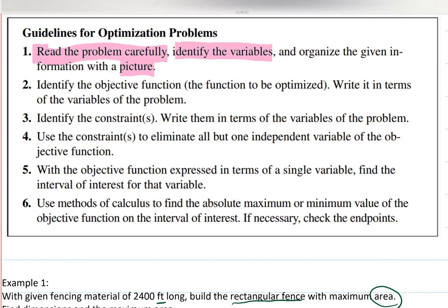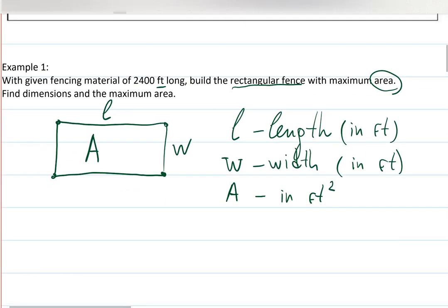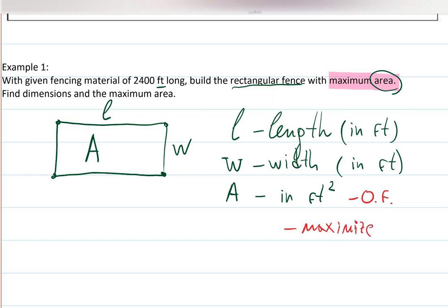Now identify the objective function — that's the function we want to optimize. It says 'find the maximum area,' so area is my objective function, and we want to maximize it. This problem is pretty realistic: imagine I went to a store during a discount and bought 2400 feet of fencing material.